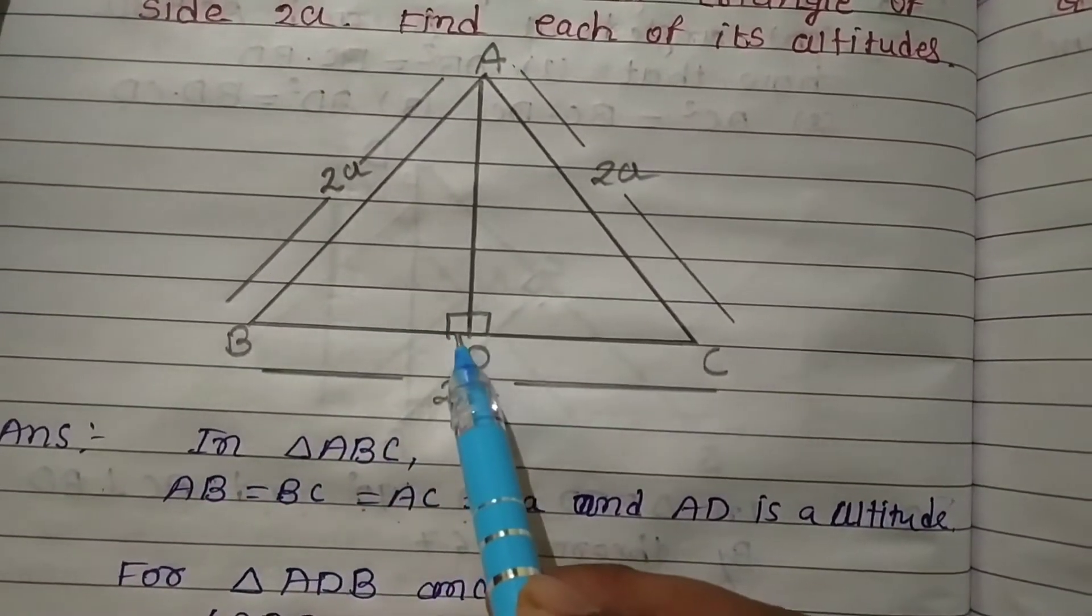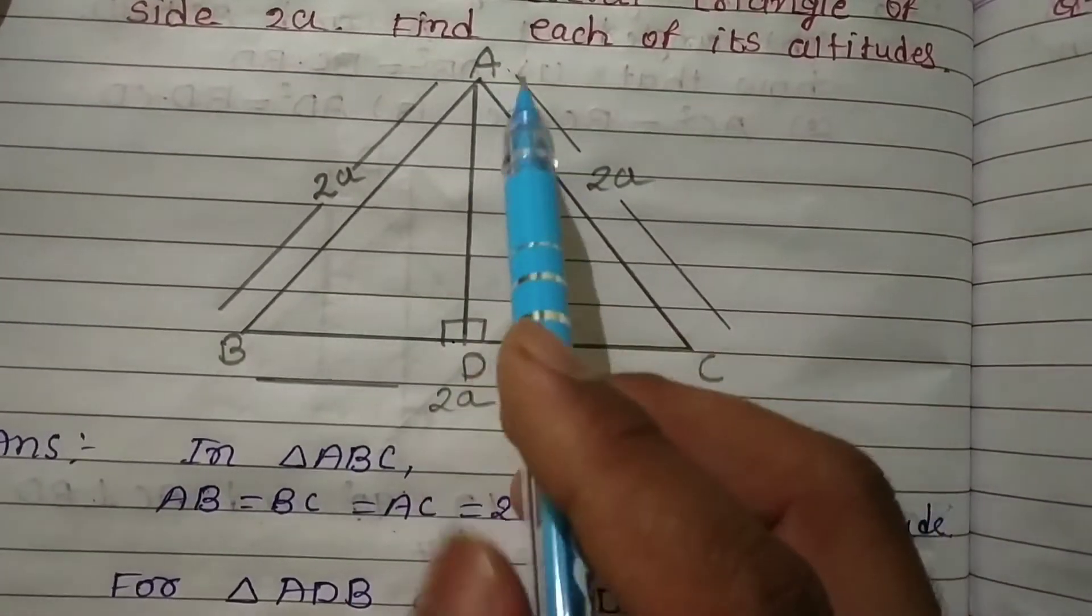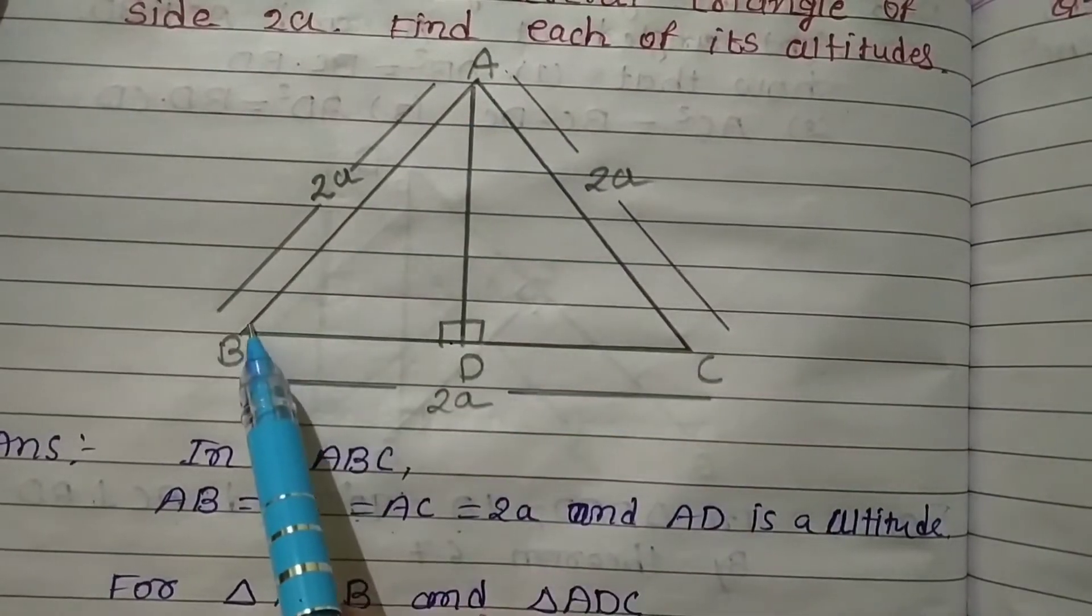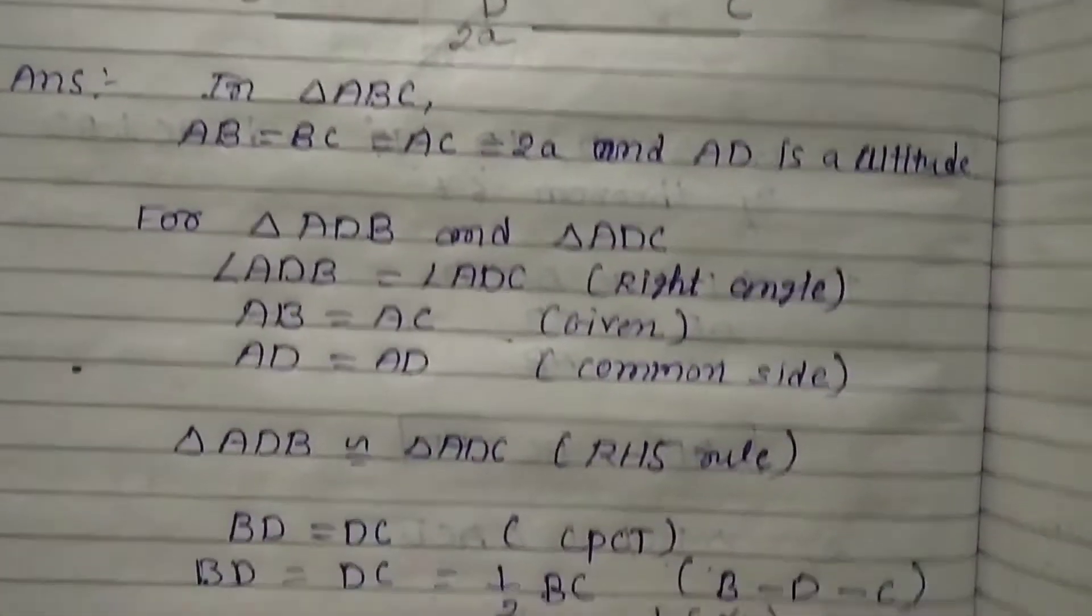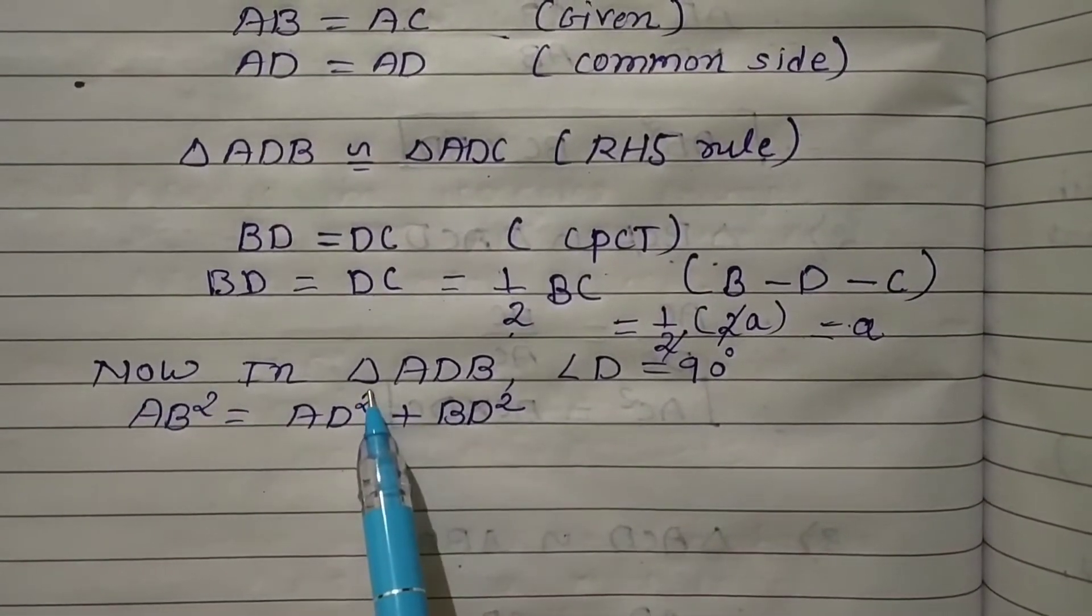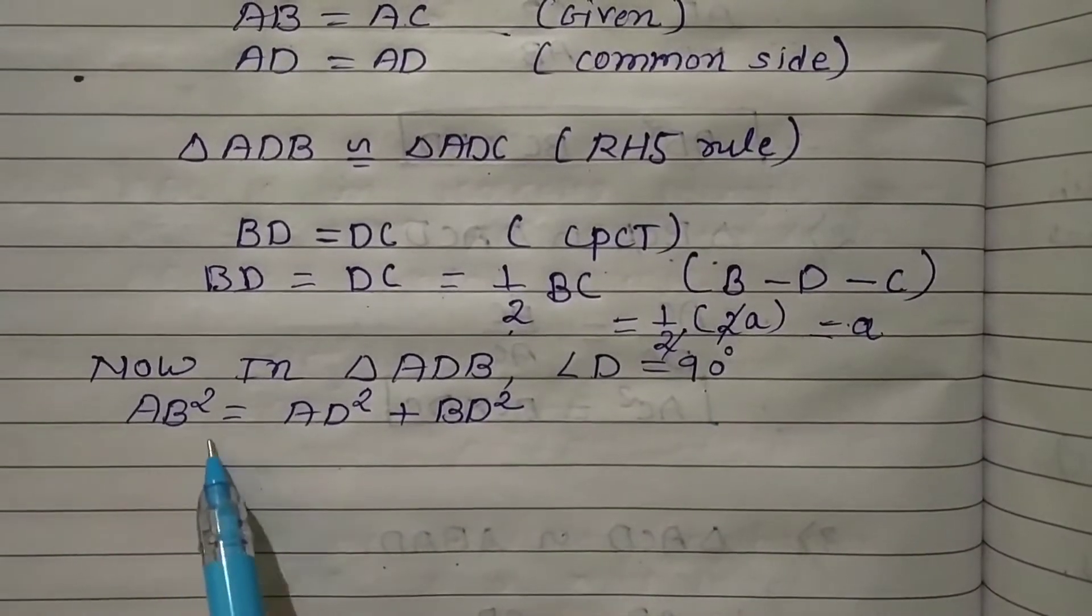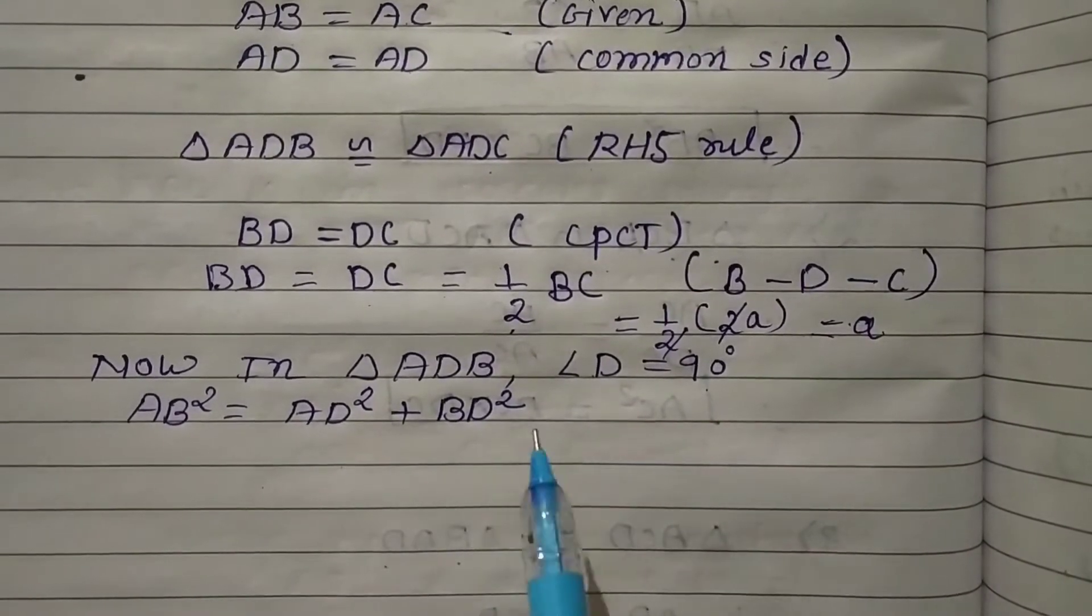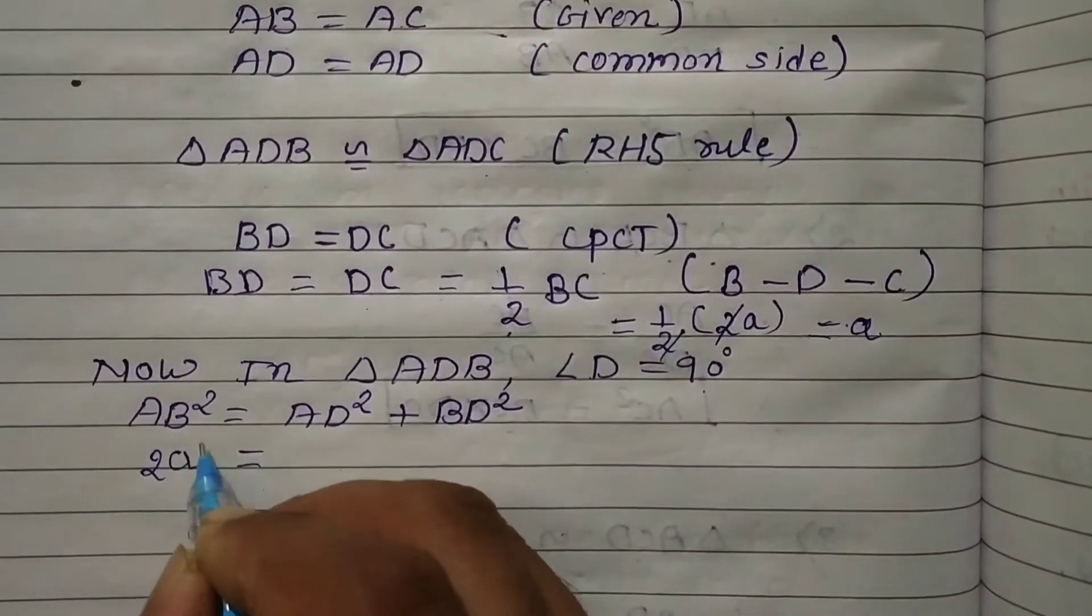So we can apply the Pythagorean theorem. In triangle ADB, angle D = 90°, so AB² = AD² + BD². Here AB = 2a.